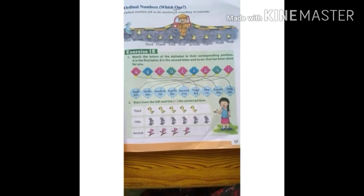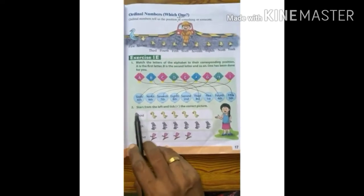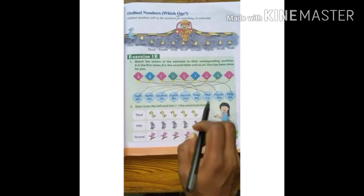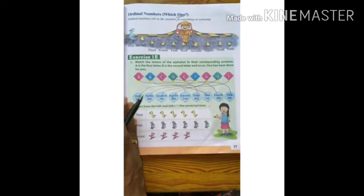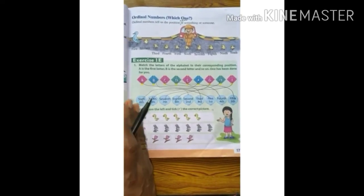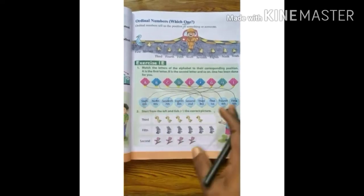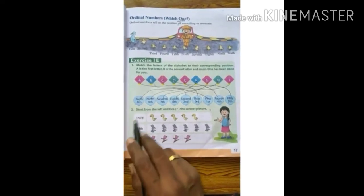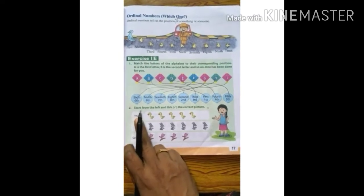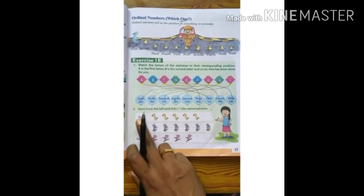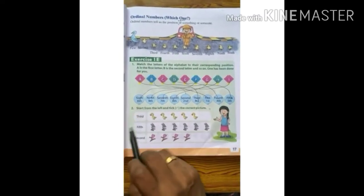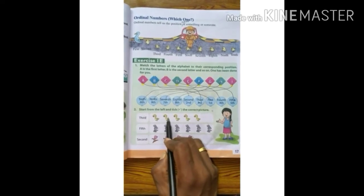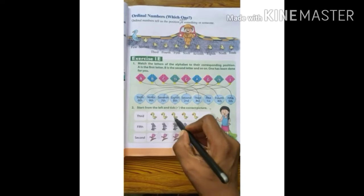Now come to the next question, Number 2. Start from the left and take the correct position. Which is your left side? From here we will count and take the ordinal numbers. You have to take the third duck. So from left we will count: 1st, 2nd, 3rd. We will mark here.